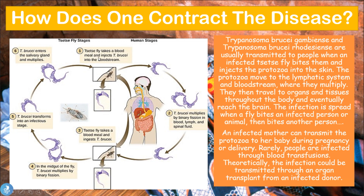The tsetse fly takes a blood meal and injects Trypanosoma brucei parasites into the patient's bloodstream. The parasites multiply by binary fission in the blood, lymph, and spinal fluid. Another tsetse fly may then bite this infected individual and ingest the parasites, becoming infected itself. In the midgut of the fly, the parasites multiply by binary fission, transform into their infectious state, enter the salivary gland, and the fly can then infect another human — continuing the cycle.